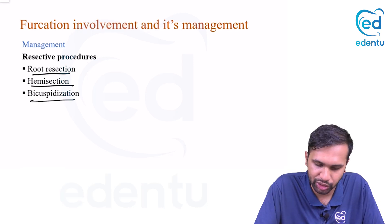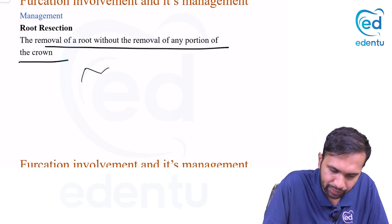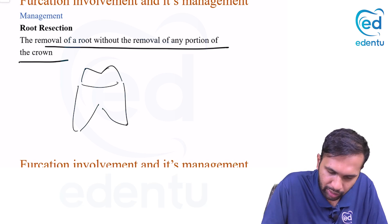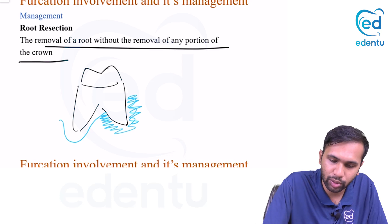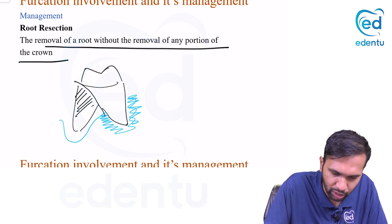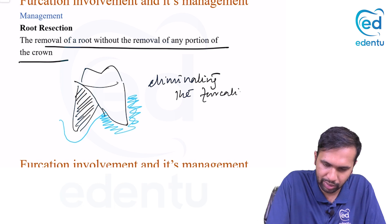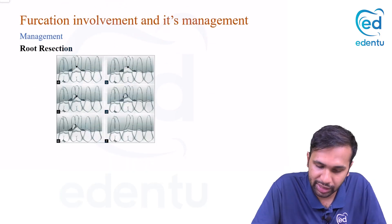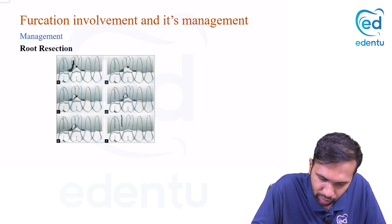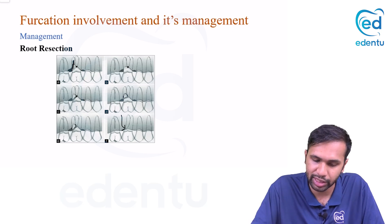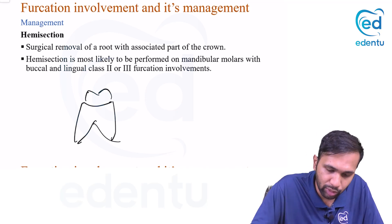Grade four mostly requires resective procedures, with advanced cases requiring extraction. There are three types of resective procedures: root resection, hemisection, and bicuspidization. Root resection involves removal of a root without removal of any portion of the crown. For example, if one root has heavy bone loss and furcation involvement while the other has good bone support, you resect and remove the involved root, thereby eliminating the furcation.